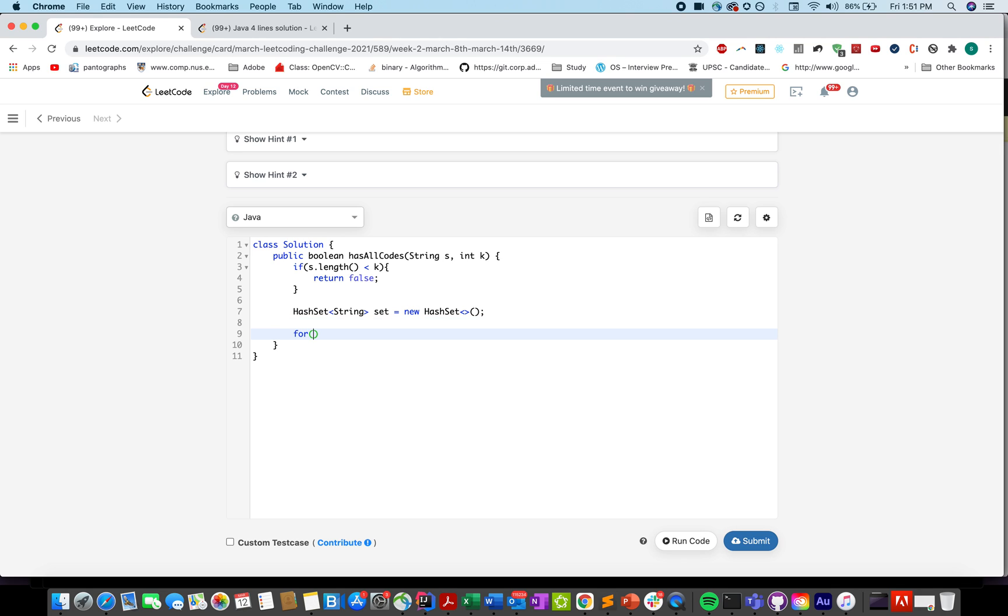We'll have a hash set of type string, new hash set. And let's start generating the substrings of size k. i equals to 0, i is less than equal to s.length minus k, i plus plus. And let's add the generated string into our hash set, s.substring i, i plus k.